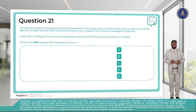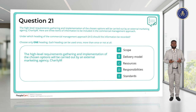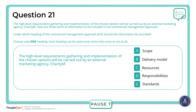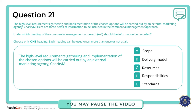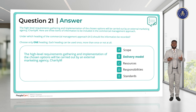Question 21. The high-level requirement gathering and implementation of the chosen option will be carried out by an external marketing agency. When looking at this, this is our delivery model — therefore the answer is B. For this type of question, it is a good idea to look at the appropriate management approach in your textbook and make sure you understand what we mean by scope, delivery model, resources, responsibilities, standards and so on.